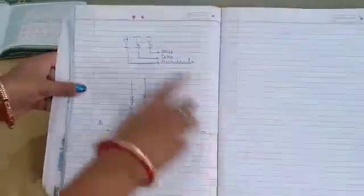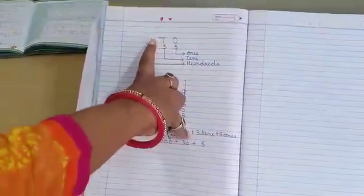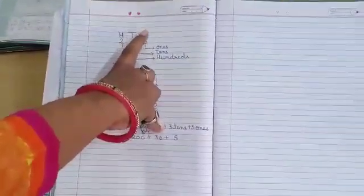Now I will show you how to write a three-digit number. Look over here: 100s, 10s, 1s.